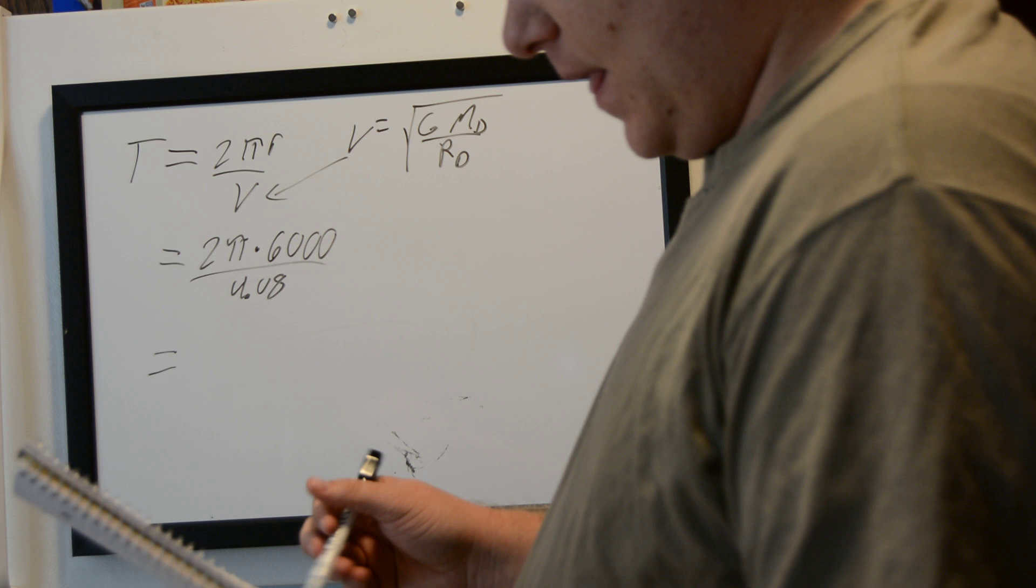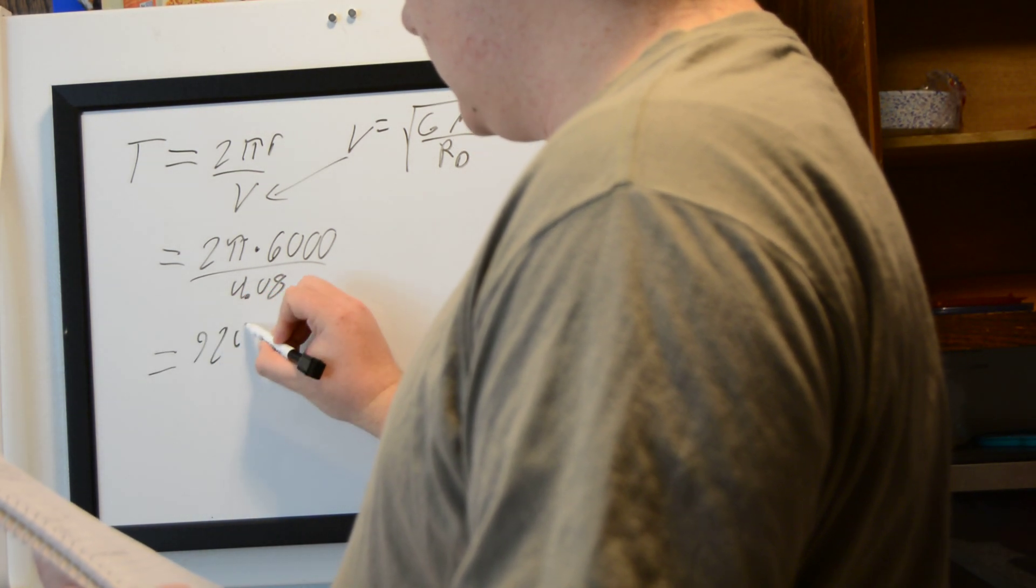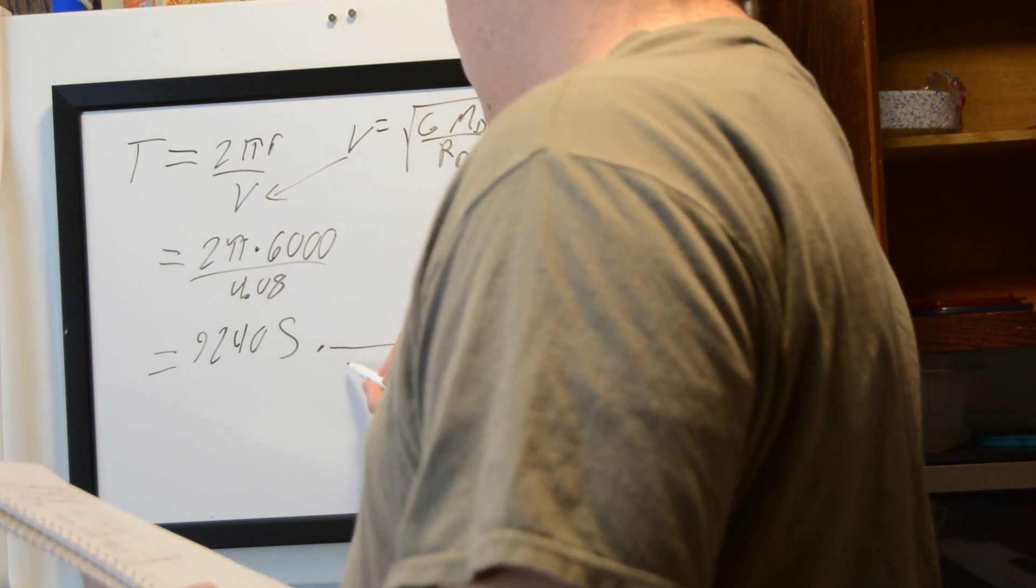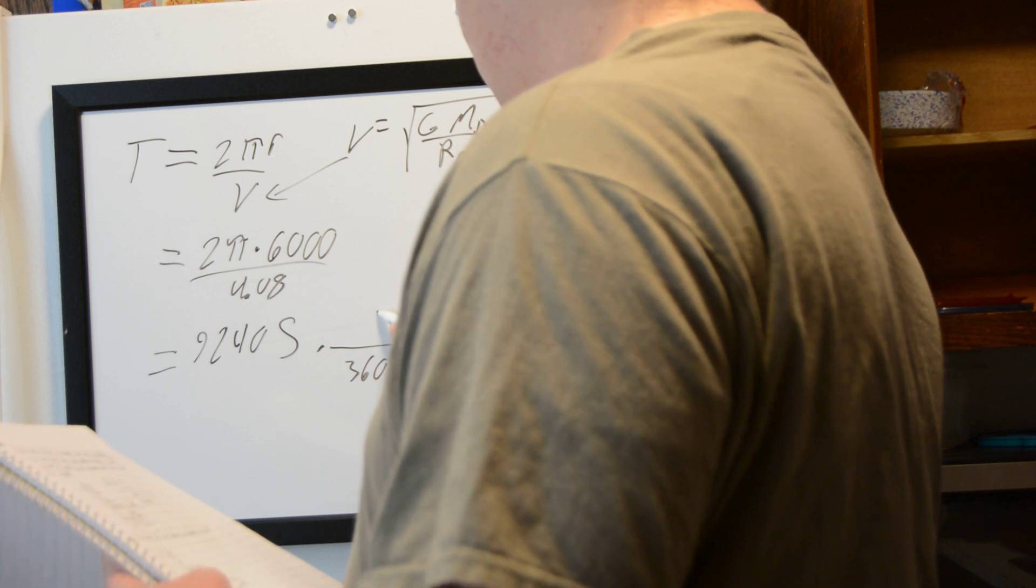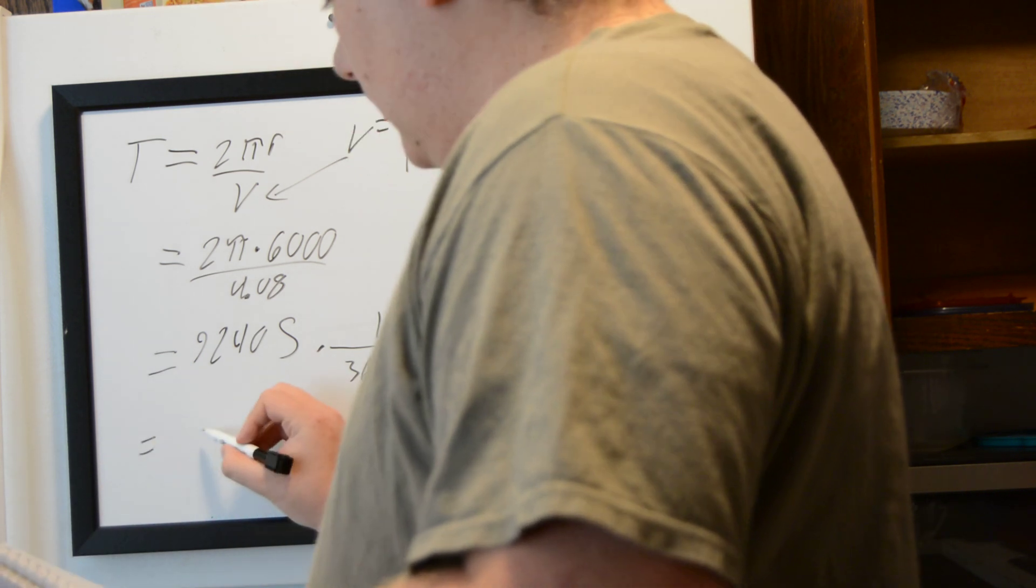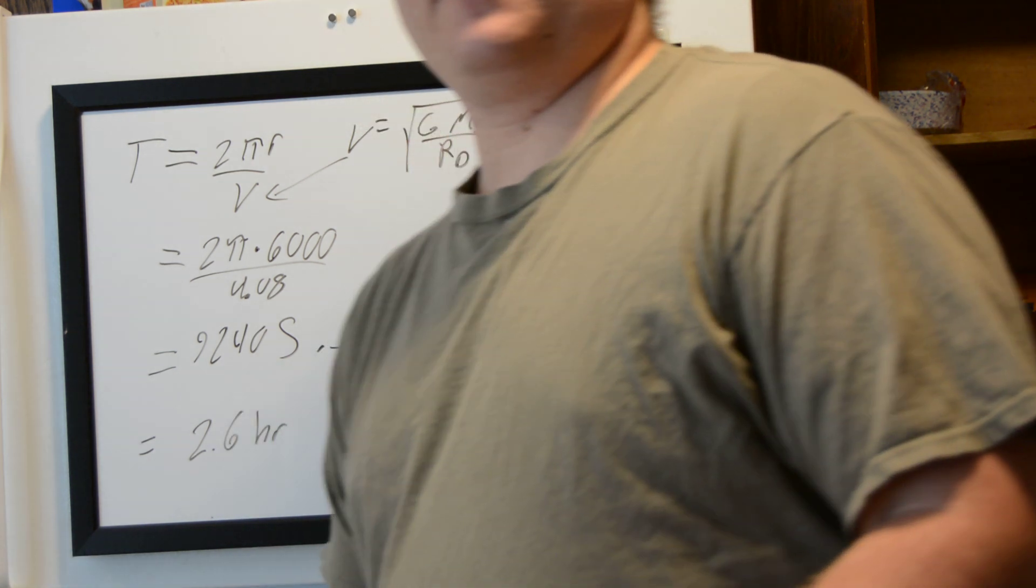So that comes out to be 9,240 seconds. And we want that in hours, so we just convert: 3,600 seconds per hour equals 2.6 hours as our period.